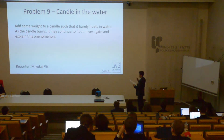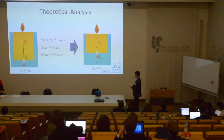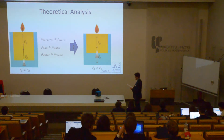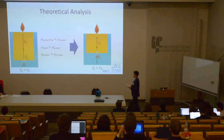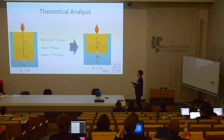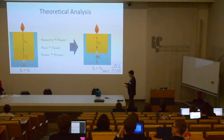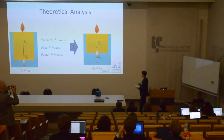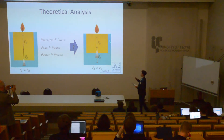At the very beginning, let's think about why anything floats in a liquid. Of course, it's because of the balance of weight and buoyancy force. The object we investigated consisted of a paraffin candle and a metal nail attached to its bottom. The density of the paraffin was slightly lower than the density of water, while the density of the metal nail was much higher. The combined density was almost identical to the density of water. You might think that as the paraffin burns, the overall density should rise and it should sink.